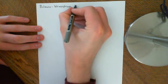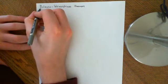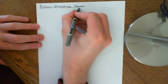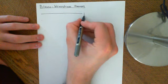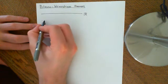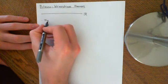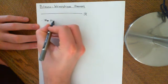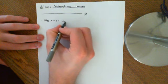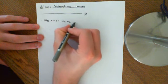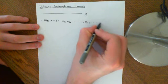So the Bolzano-Weierstrass theorem: basically, if you take a sequence of real numbers — here is the real line, and you have some sequence x, which is a sequence of real numbers — so we have x1, x2, x3, etc., and you can go on and on, so we have xn, the arbitrary term.